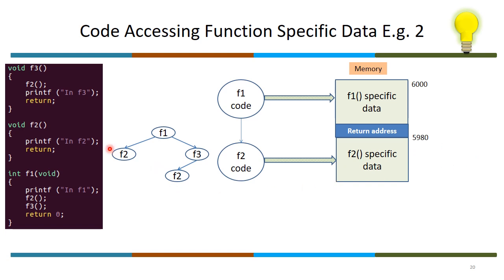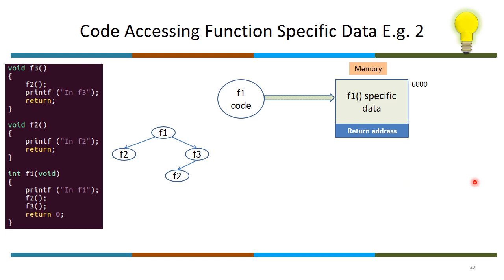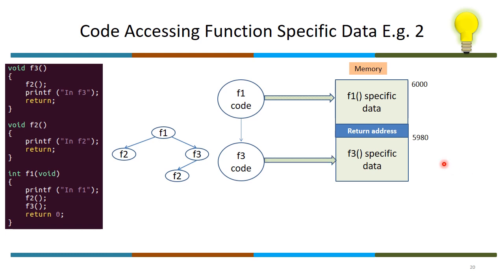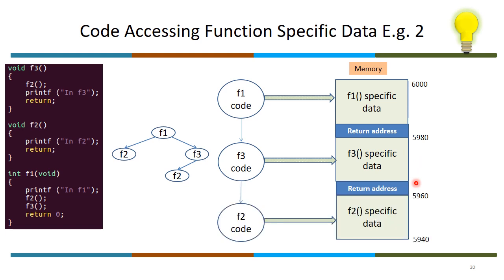The same example as before: F1 invoking F2, F2 returning, then invoking F3, and F3 invoking F2 again. F1 code starts executing, allocates memory for F1-specific data, and invokes F2. F2 accesses its specific data — mark the address: 5980 is the start address of F2-specific data. Assume there are local variables in every function. Now F2 finishes execution. The address was 5980 — please remember this.